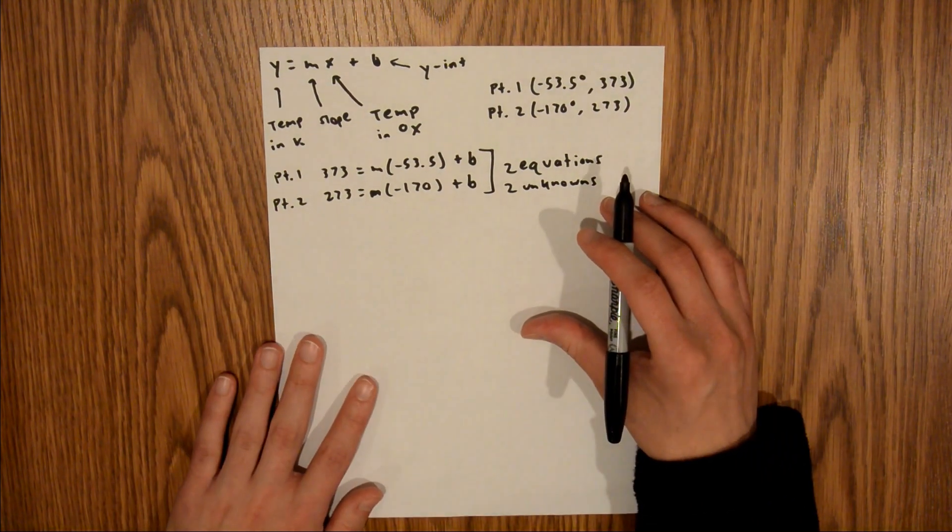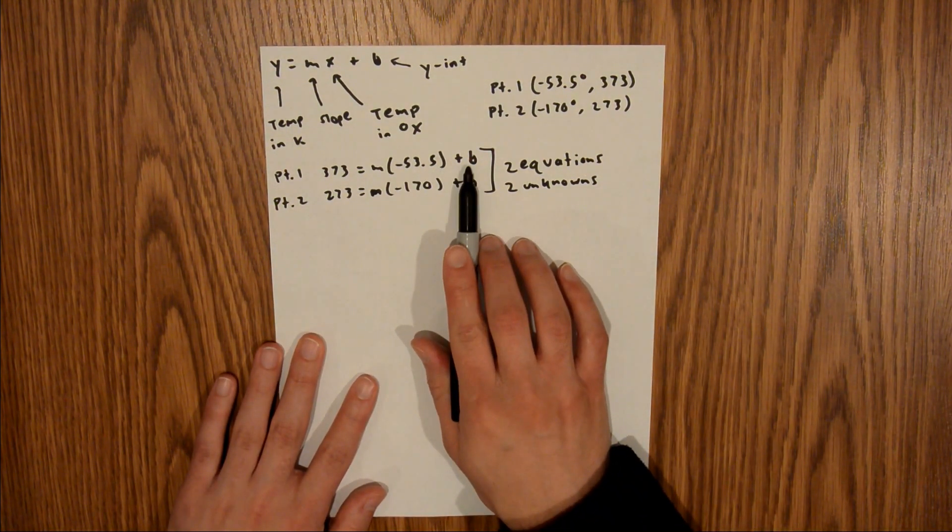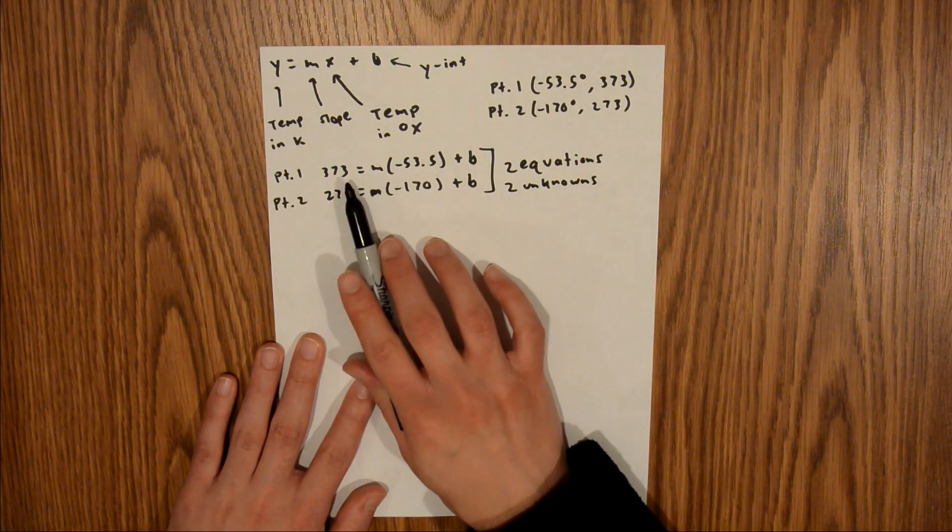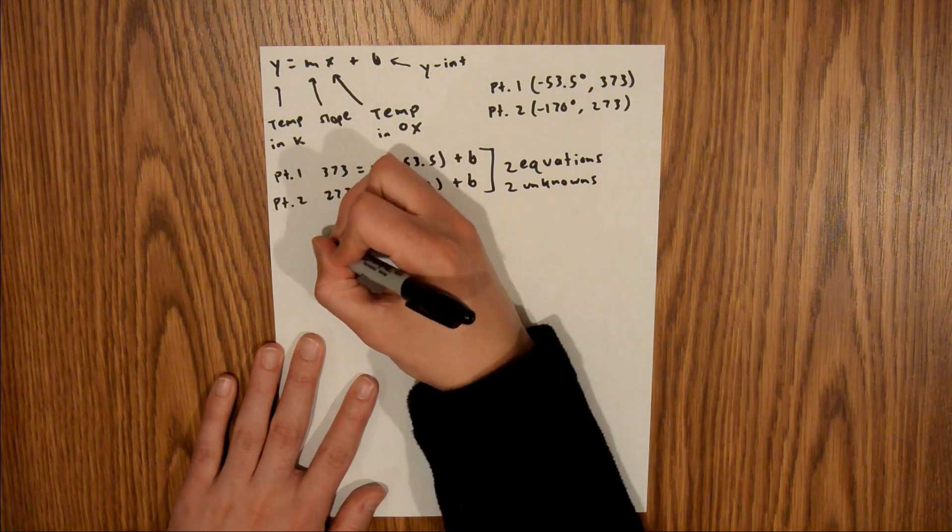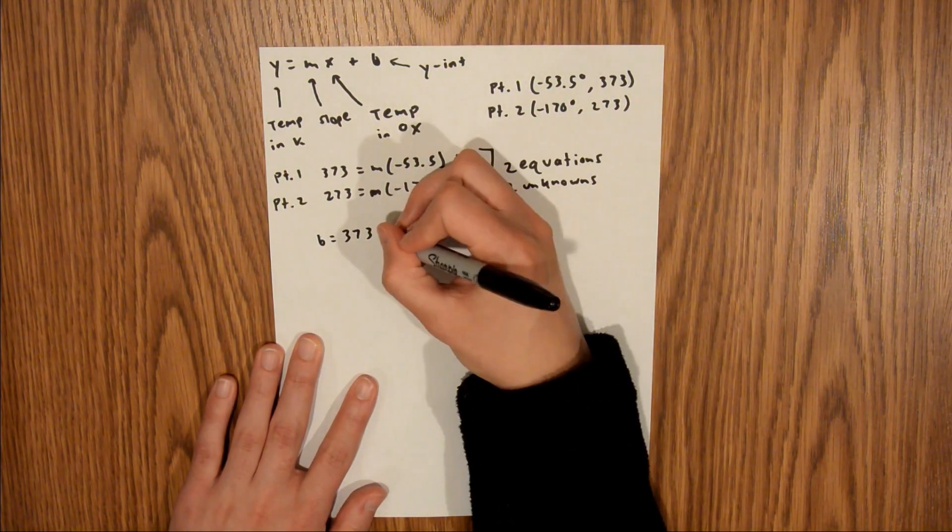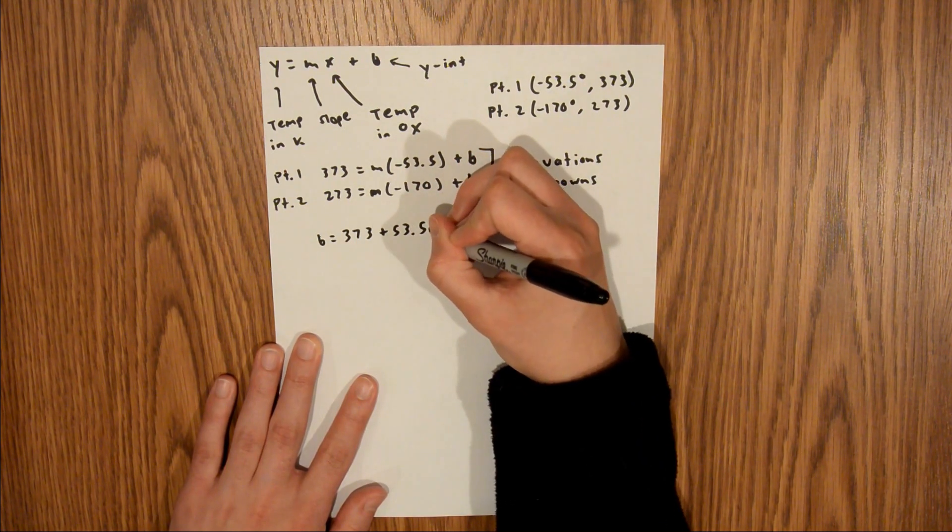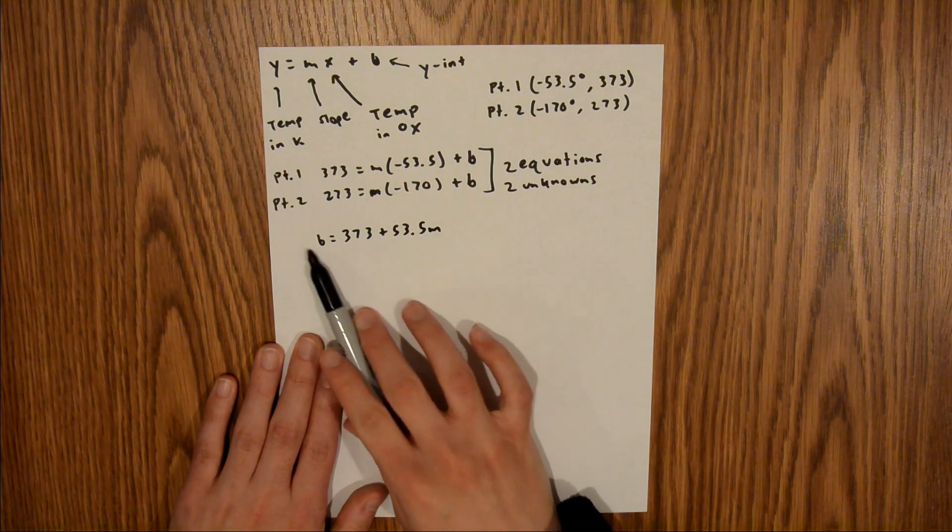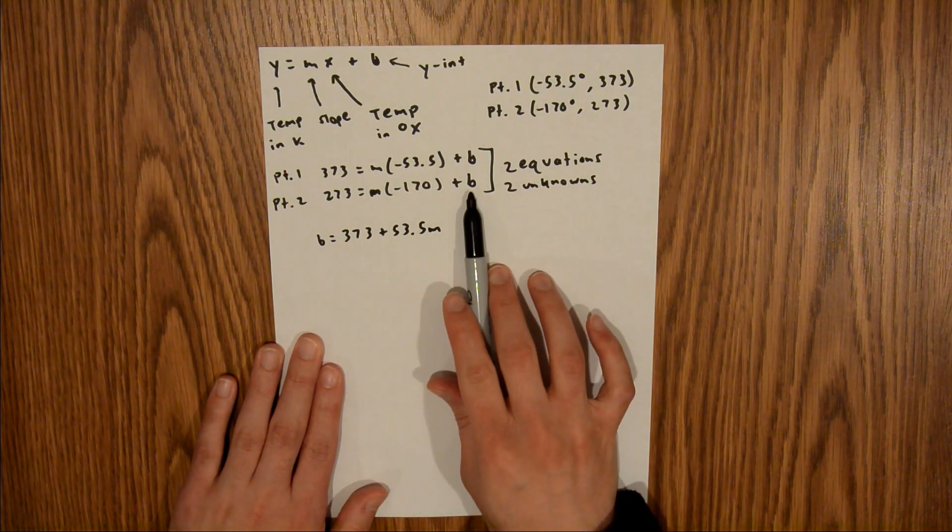And so, what I'm going to do first is I'm going to isolate b in the first equation. So, I'm going to add 53.5m to both sides of this equation, and that's going to leave me with b is equal to 373 plus 53.5m. And now that I have b as a function of m, I'm going to take this and plug it into the b in equation two.